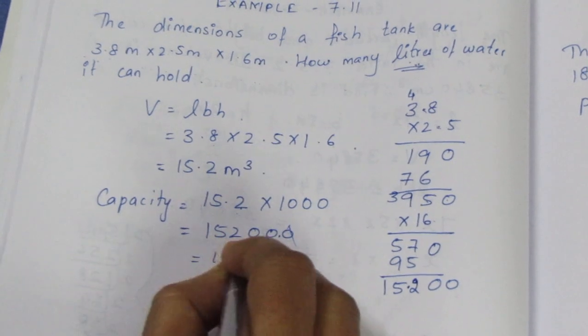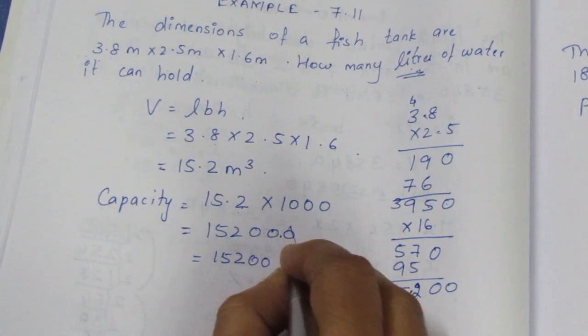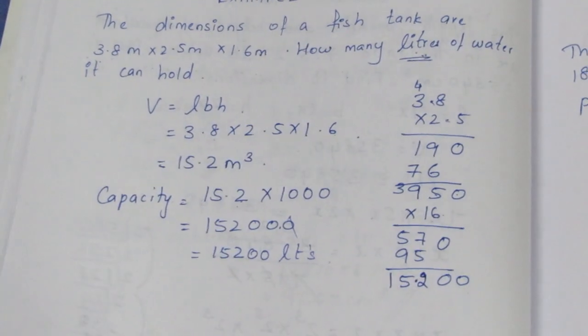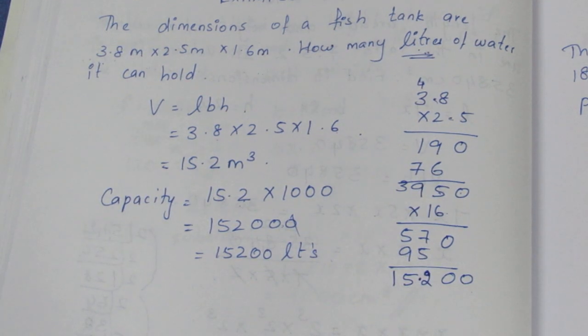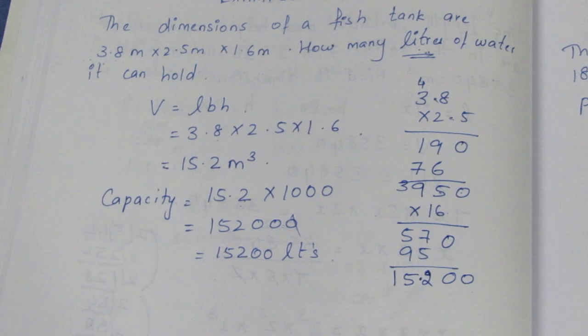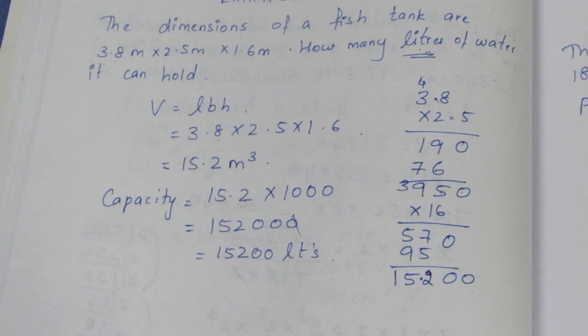This gives us 15,200 liters. This is the amount of water the fish tank can hold. So 15,200 liters. Thank you.